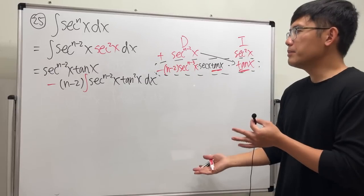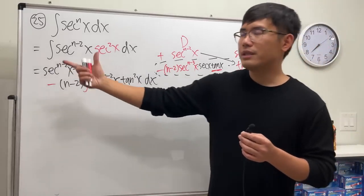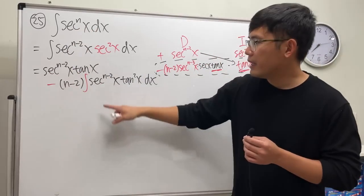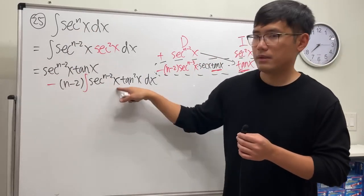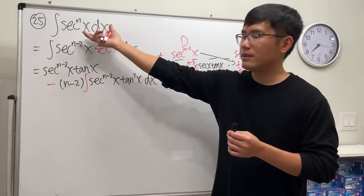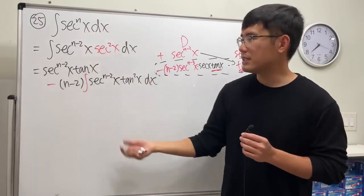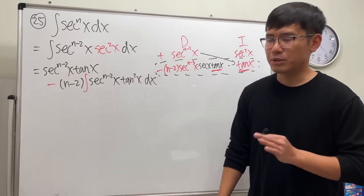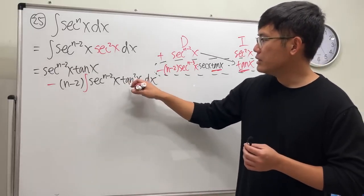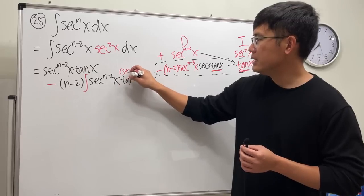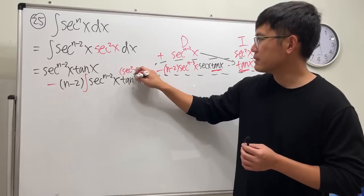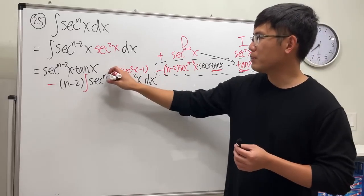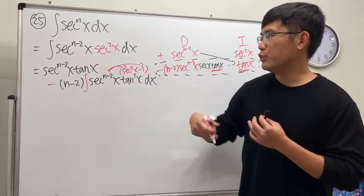This looks complicated, but we did end up with the first part of the answer, and this part has less power than the original. The issue is the tangent square x, but tangent square x is the same as secant square x minus 1, so we substitute that in and it becomes a repeated situation.